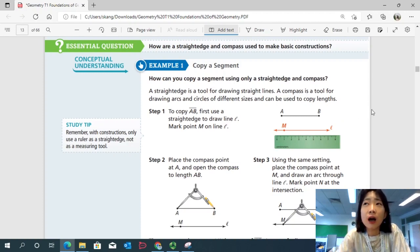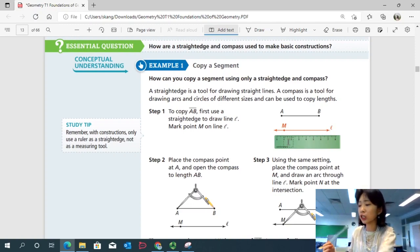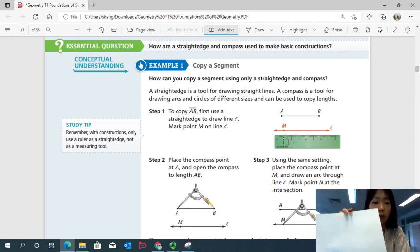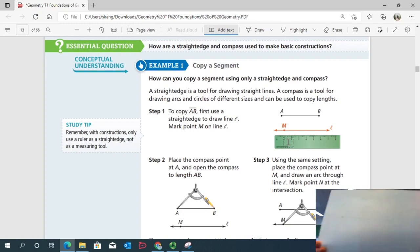So first step one, to copy AB, first use a straightedge to draw line L. So you're going to draw a straight line using your straightedge first. And it could be any line on any piece of paper with any length. Because by definition, a line is infinitely long. So the arrows go the opposite way to infinity.